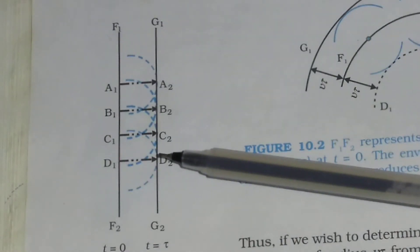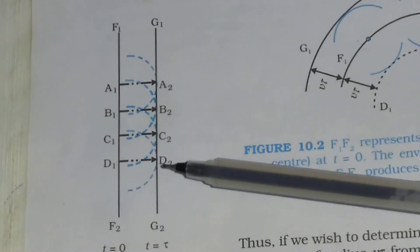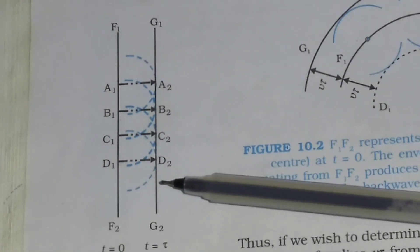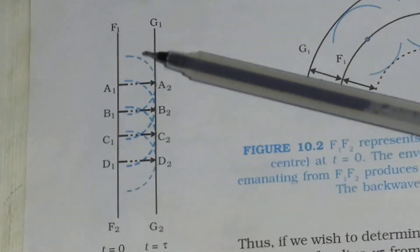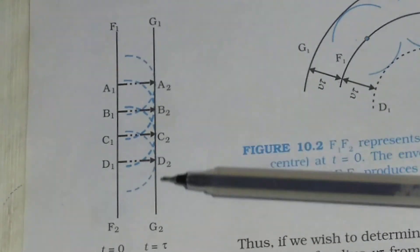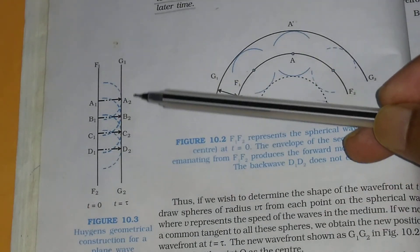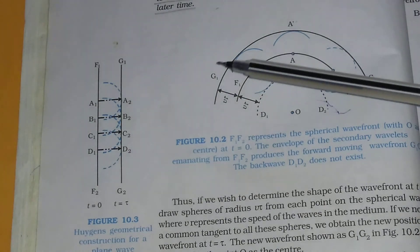And in this picture, you see the Huygens' geometrical construction for a plane wave propagating to the right F1, F2. This is the plane wavefront and this is the spherical wavefront.